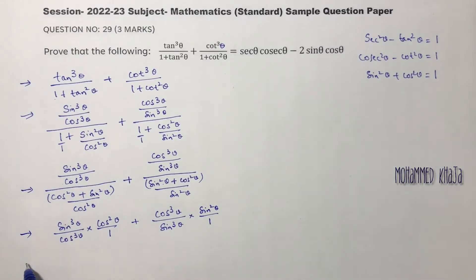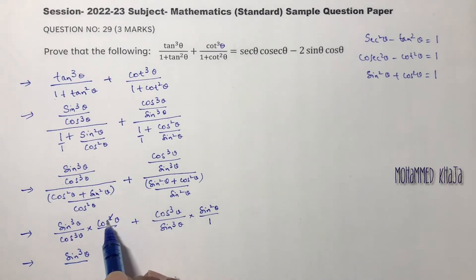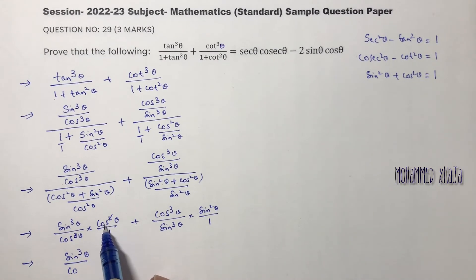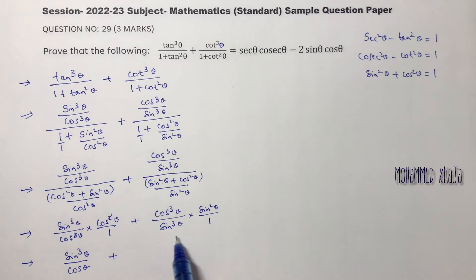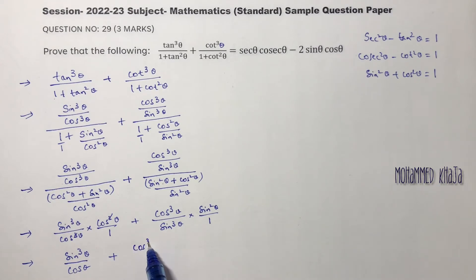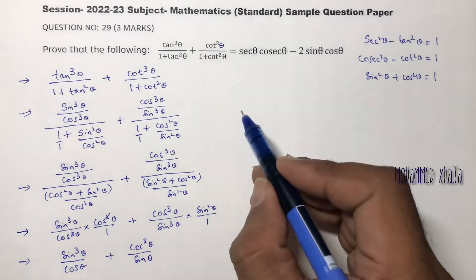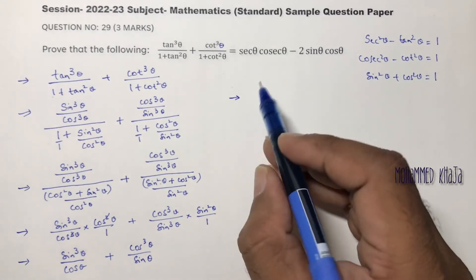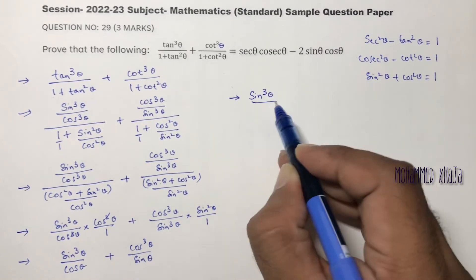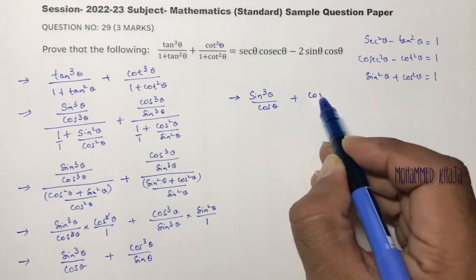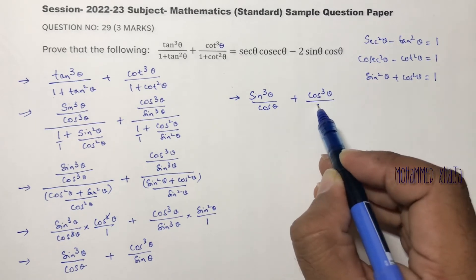Here sin cube theta divided by cos cube theta: cos square cancels with cos cube, leaving cos theta. So we get sin cube theta by cos theta. Here for the second term, sin cube theta divided by sin square gives sin theta remaining. So we get cos cube theta by sin theta. Now after this step we have sin cube theta by cos theta plus cos cube theta by sin theta. Next step is to get sec and cosec.